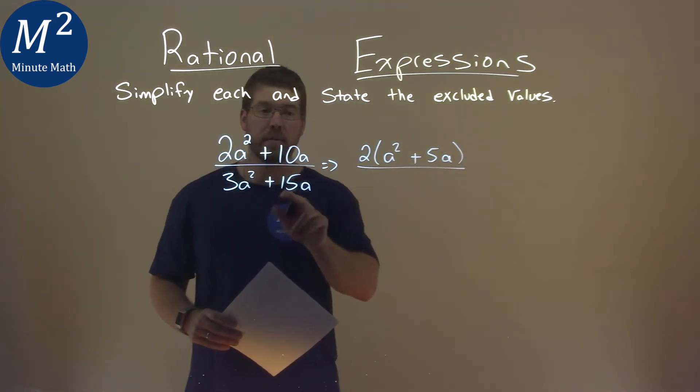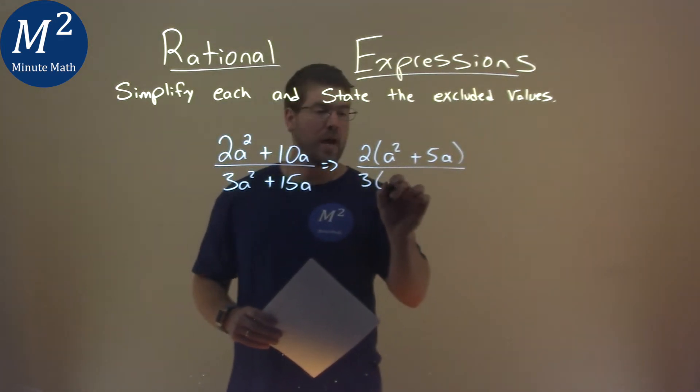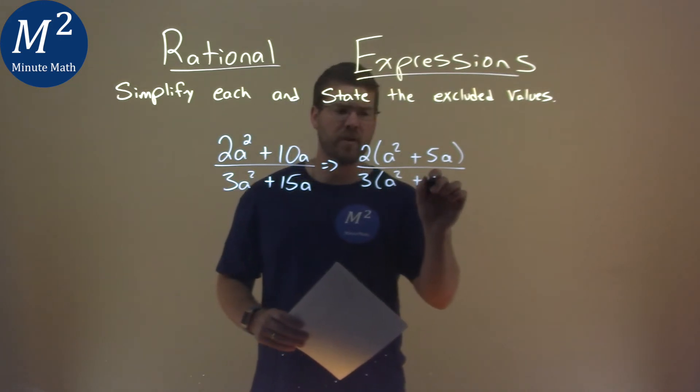The denominator, I'm going to pull out a 3. If I pull out a 3, I'm left with an a squared plus 5a.